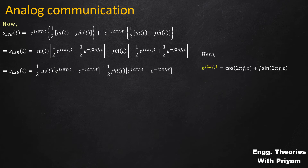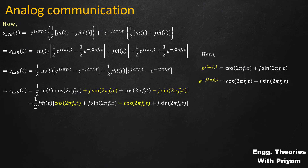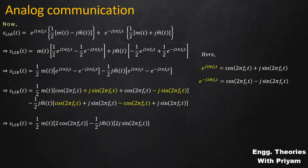Here, e^(j2πFct) = cos(2πFct) + j·sin(2πFct) and e^(-j2πFct) = cos(2πFct) - j·sin(2πFct). Substituting into the equation, the j·sin(2πFct) terms and the cos(2πFct) terms cancel appropriately. This simplifies to (1/2)·m(t)·2cos(2πFct) - (1/2)·j·m̂(t)·2j·sin(2πFct). The 1/2 and 2 cancel each other out.